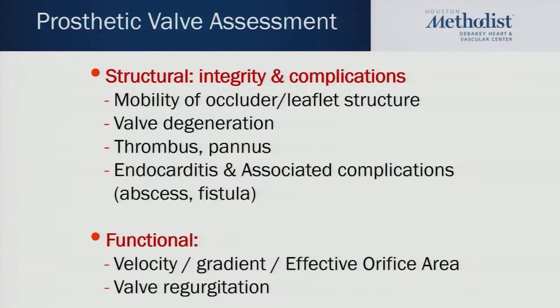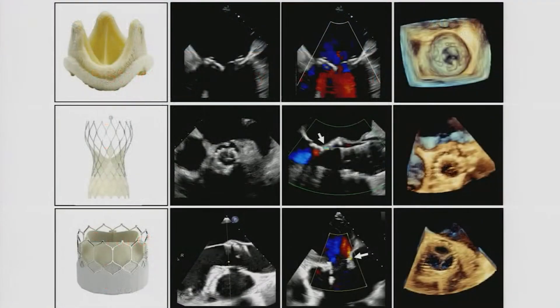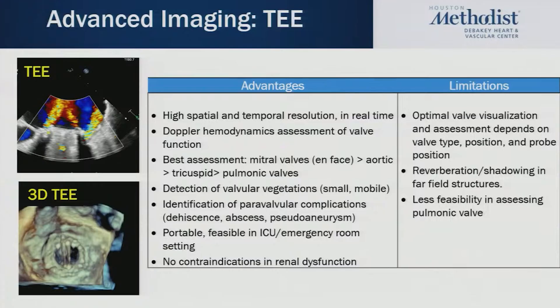The second key area is functional evaluation, and that's where the first transthoracic echocardiogram is important — this is where Doppler velocities, gradients, and measurement of effective orifice area occur. Is there valvular regurgitation and how much? If you do a transesophageal echocardiogram, it has the best temporal resolution and very good spatial resolution.